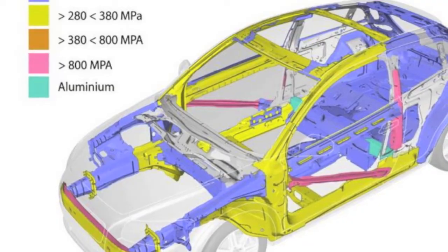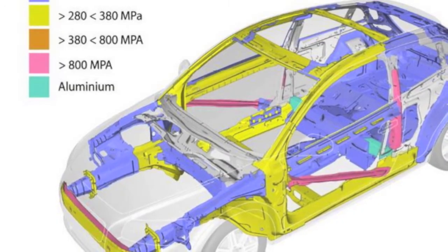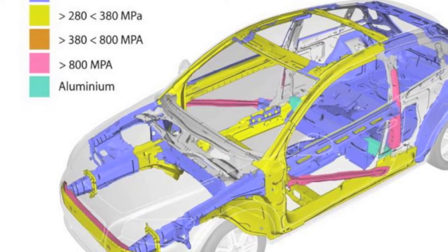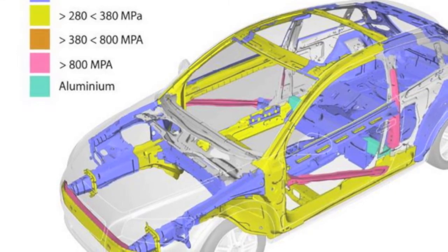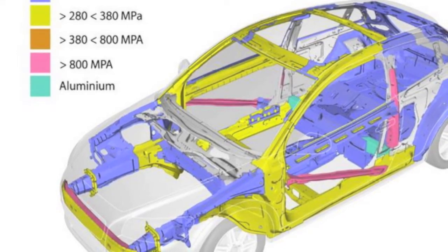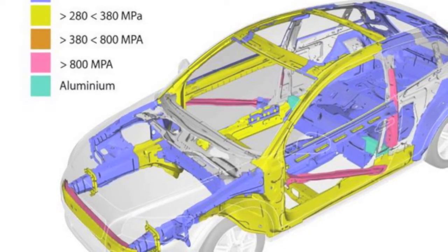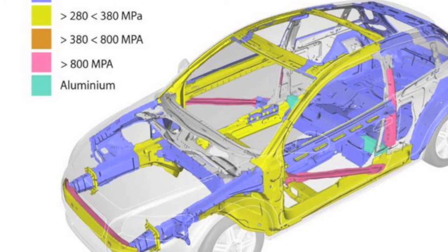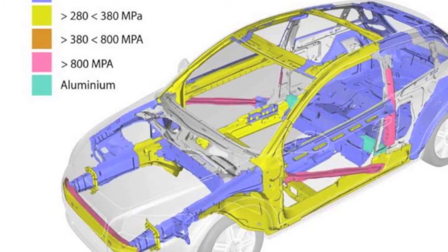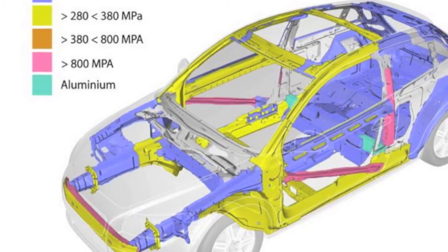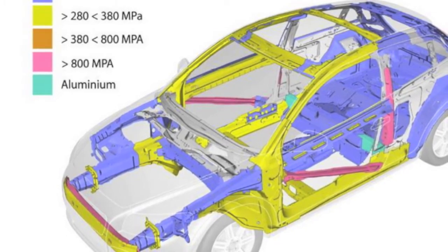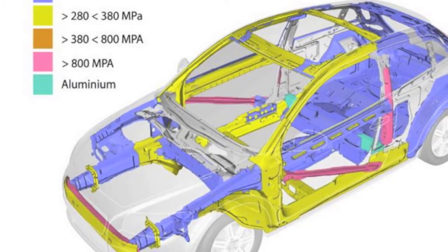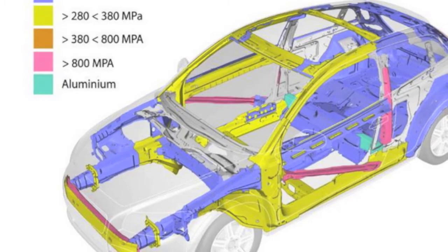Car frames are usually built with steel and need to have high compressive and tensile strengths to maintain their stiffness. Some parts of the frame need to have flexible and elastic capabilities, however, to endure large impacts without breaking.